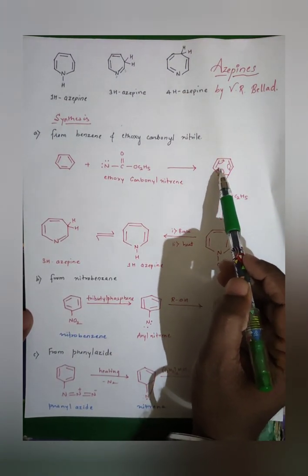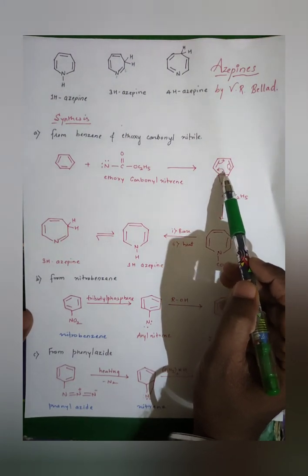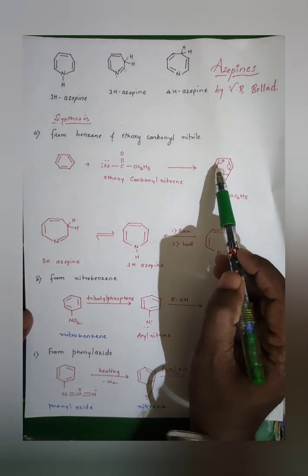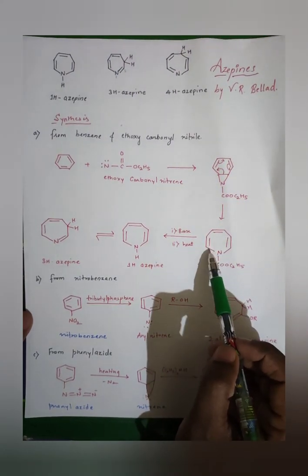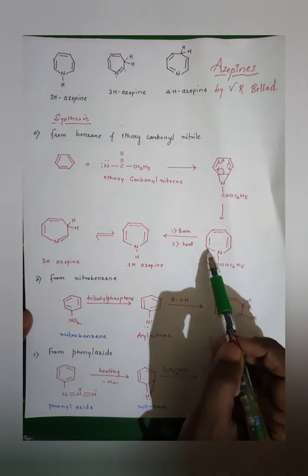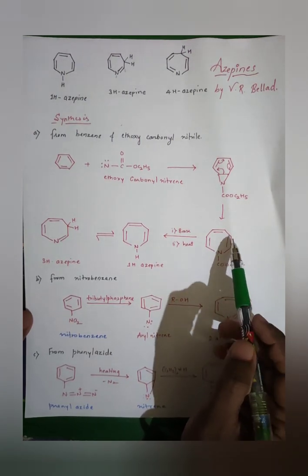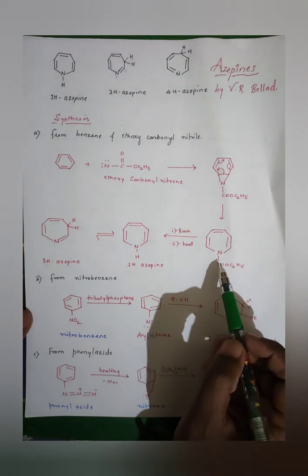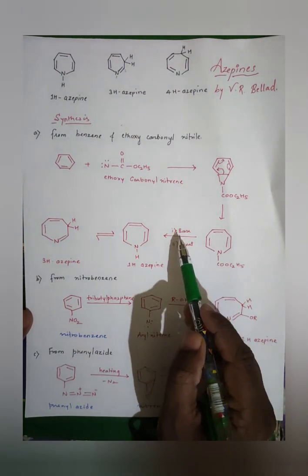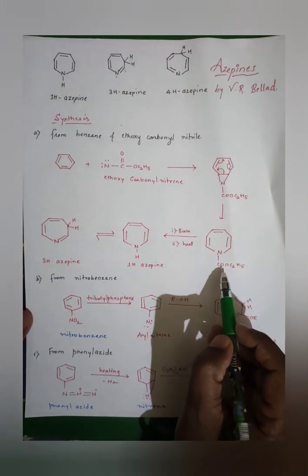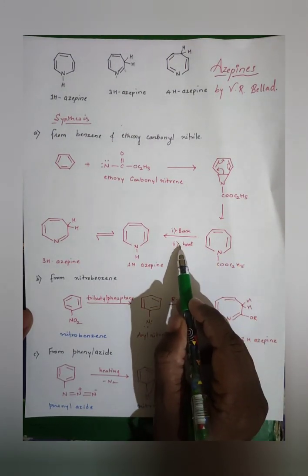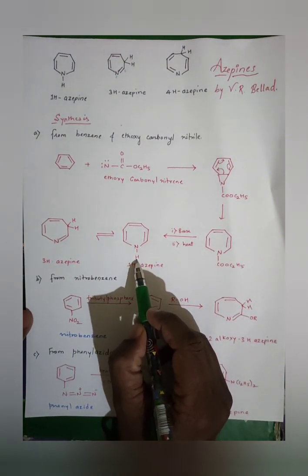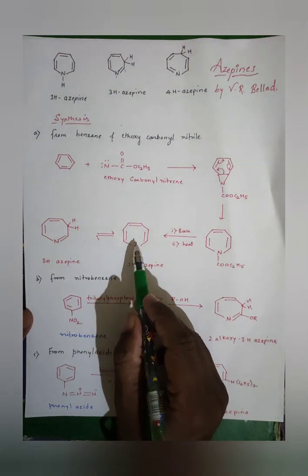After nitrene insertion, bond shifting takes place in an electrocyclic ring opening reaction. This bond moves, that bond moves, and we get an azepine-type structure. When treated with base, the COOC₂H₅ group gets converted to COOH, and on heating, CO₂ is lost.